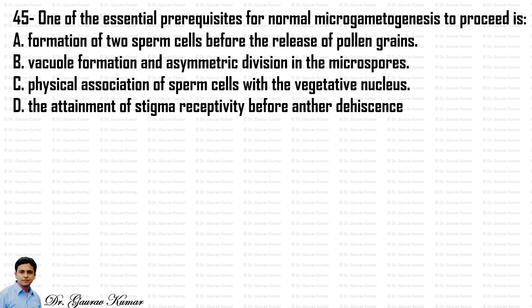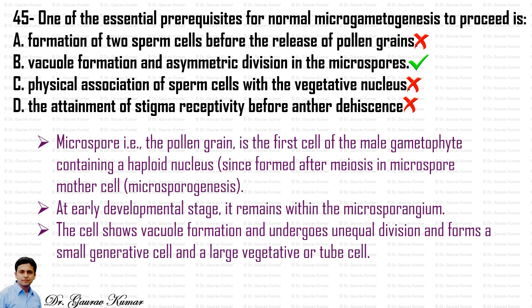One of the essential prerequisites for normal microgametogenesis to proceed is vacuole formation and asymmetric division in the microspore. The microspore — the pollen grain — is the first cell of the male gametophyte containing a haploid nucleus, formed after meiosis in microspore mother cells during microsporogenesis. At early developmental stages it remains within the microsporangium. The cell shows vacuole formation and undergoes unequal division, forming a small generative cell and a large vegetative or tube cell. Hence the answer is vacuole formation and asymmetric division in the microspore.